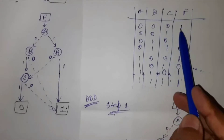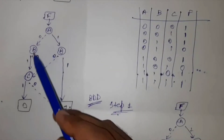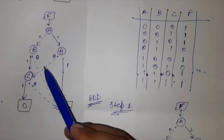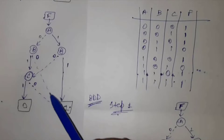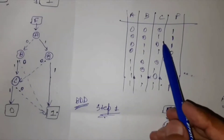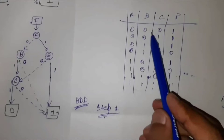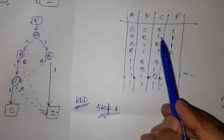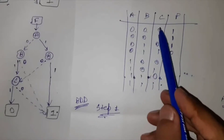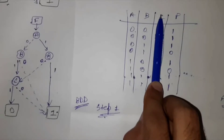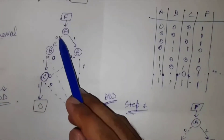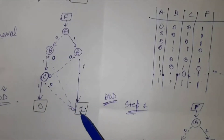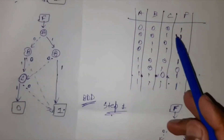0, 0, 0 should give us 1 — this is 0, 0 and this is 1. When A and B are both 0, we can ignore the C value because irrespective of C, if A and B are both 0, we get 1. So, 0 and 0, we are getting 1. First two rows are checked.